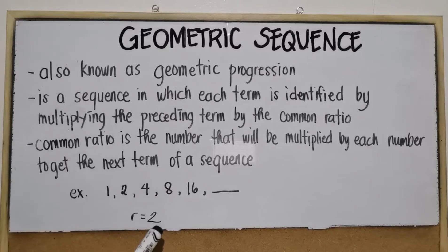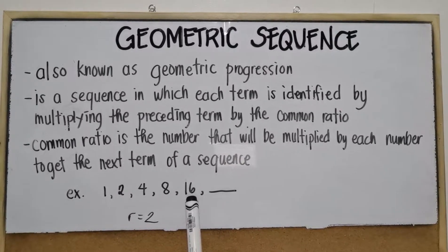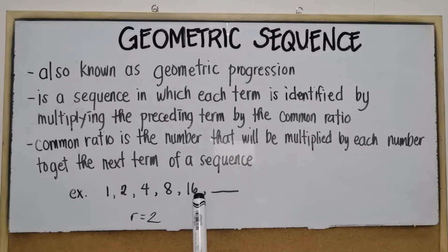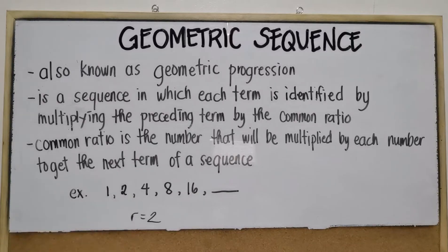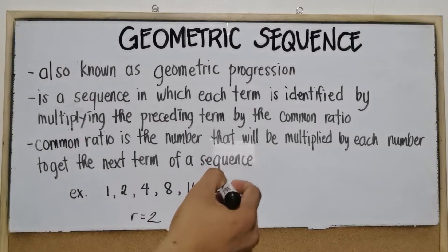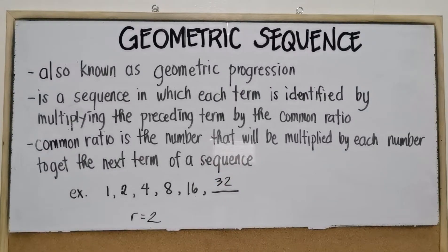Now that we've identified the common ratio, which is 2, let's try to solve the next term after 16. If the common ratio is 2, then the next term after 16 is 32. That is 16 times 2, which equals 32.